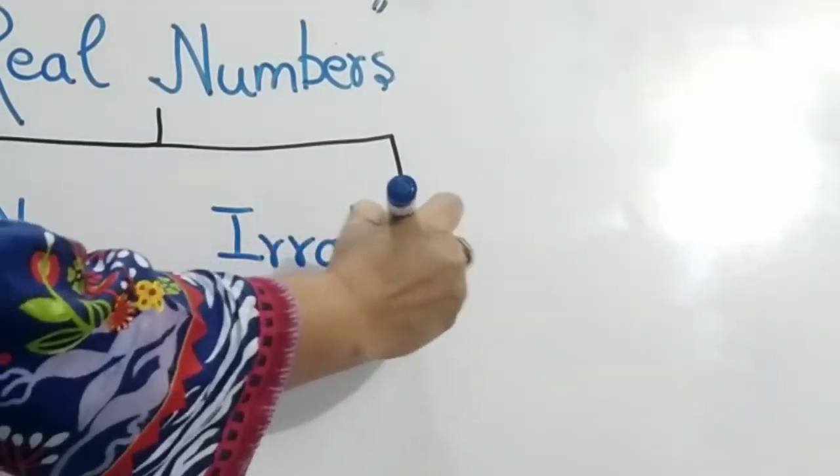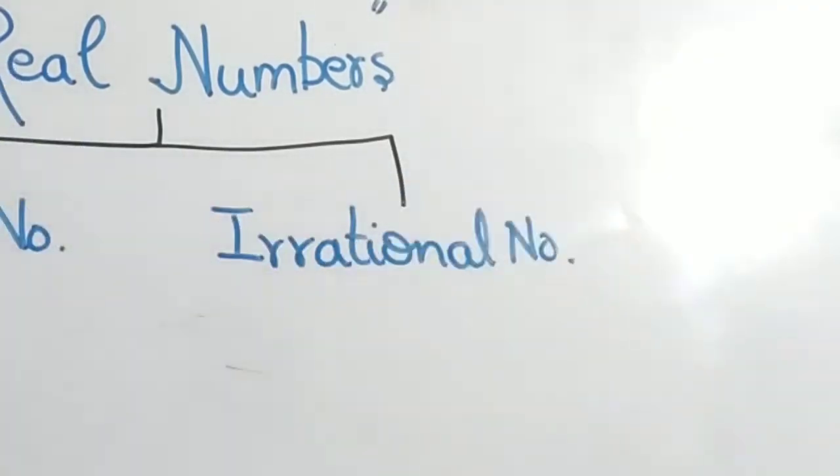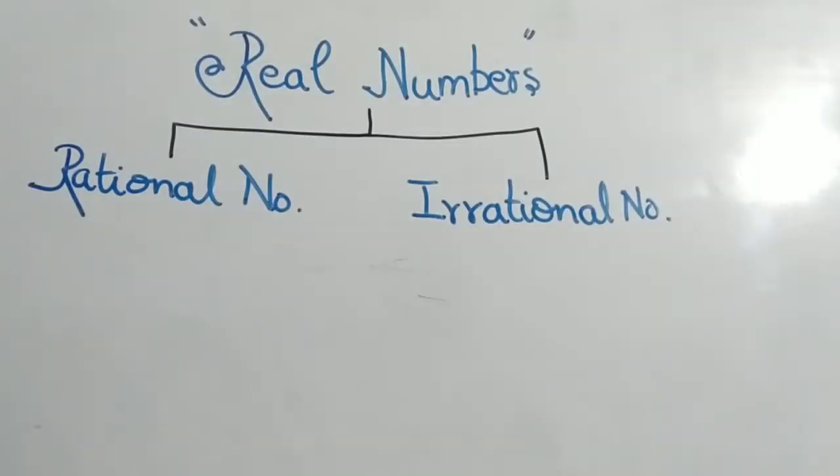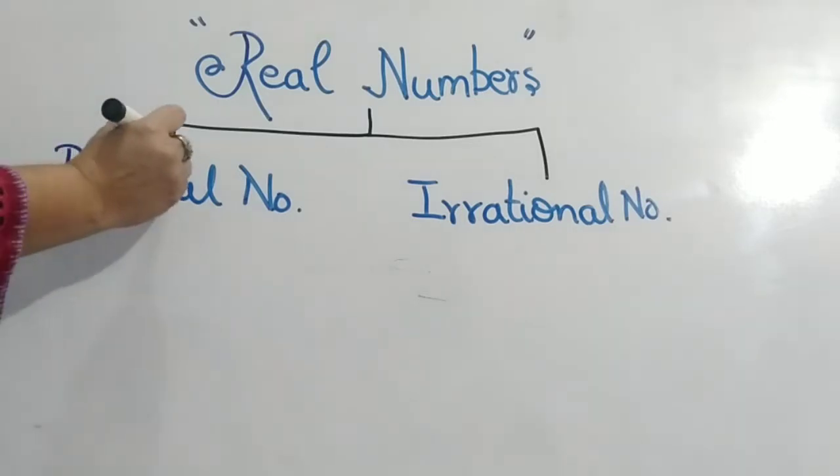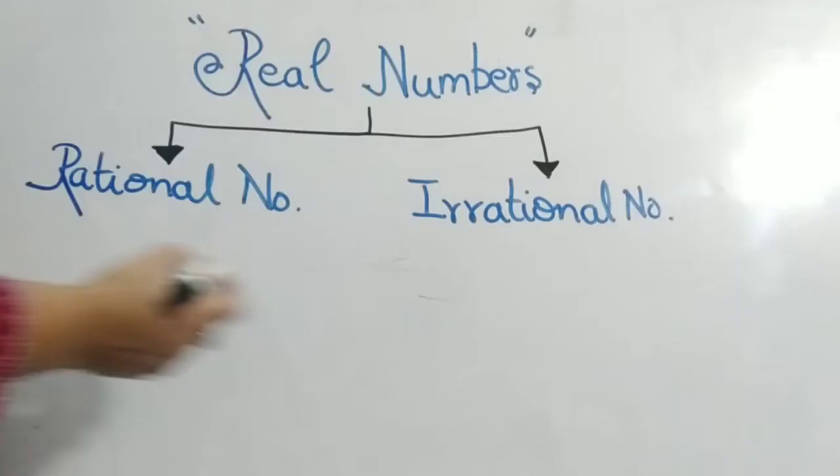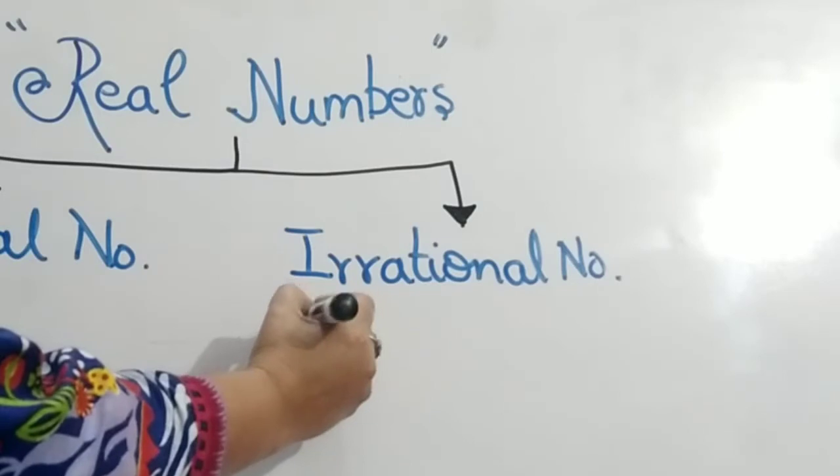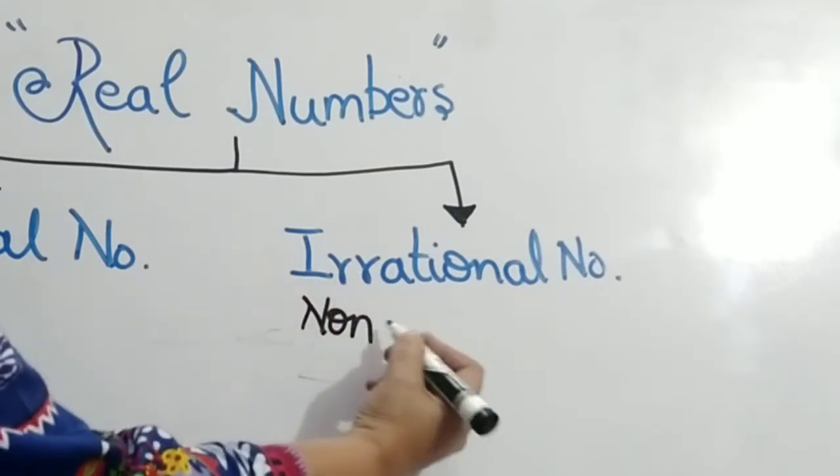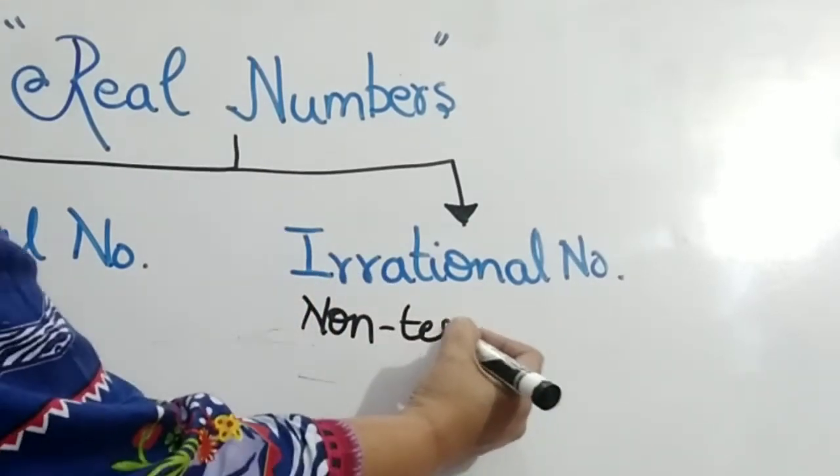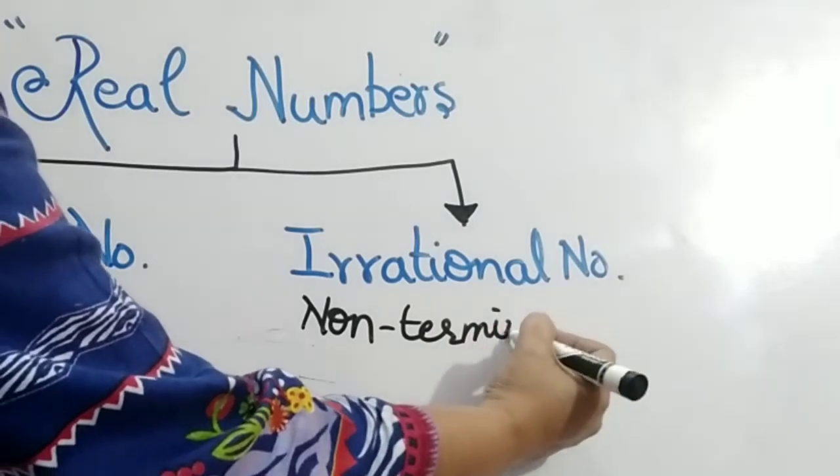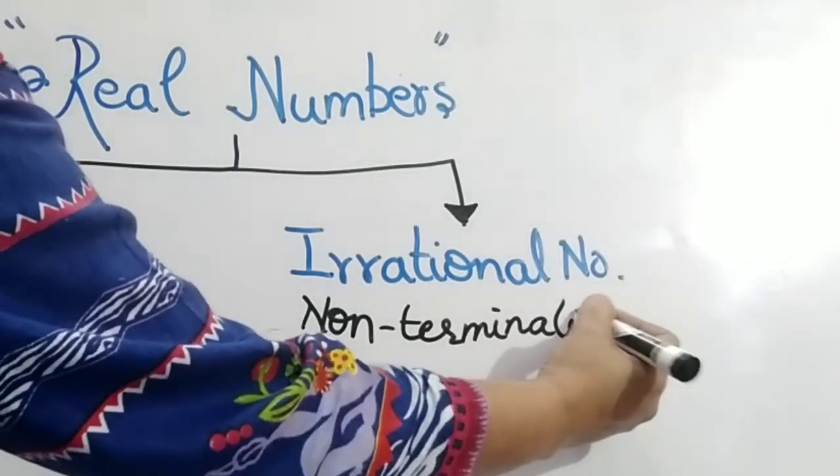What are rational numbers? First of all, we will tell you what are irrational numbers. They are non-terminating numbers. Non-terminating means that when we divide, we have no exact answer.